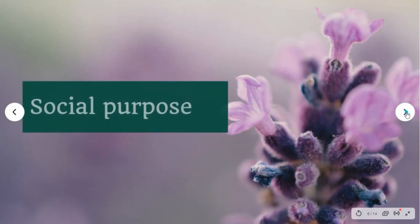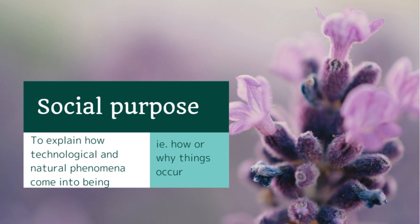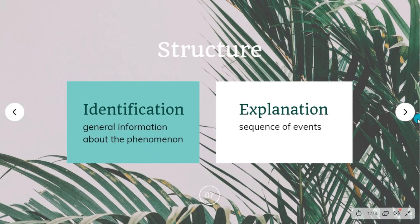As for social purpose, the purpose of explanation is to explain how technological and natural phenomena come into being — for example, how or why things occur. Of course, it will tell about the process.